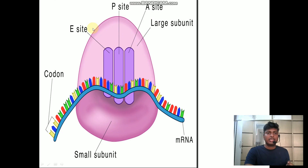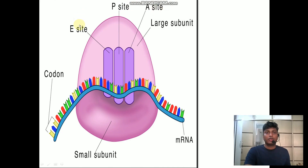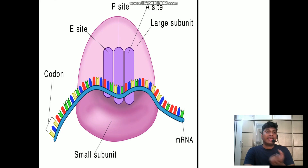Inside the ribosome there are three different sites: the E site, the P site, and the A site. The E site stands for exit site, the P site stands for peptidyl site, and the A site stands for amino acid site. I will be explaining the role of each of these sites when we talk about the mechanism of translation in the part two video.